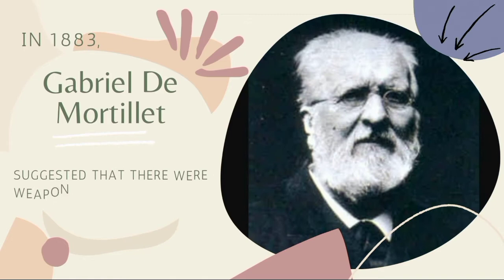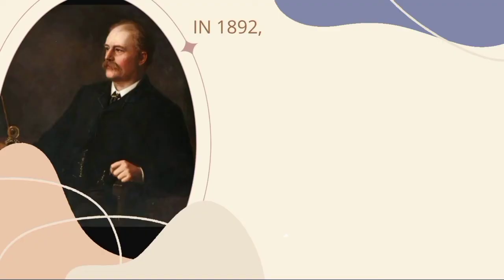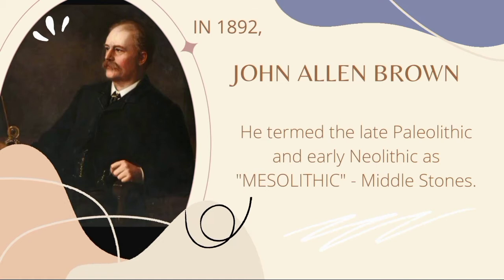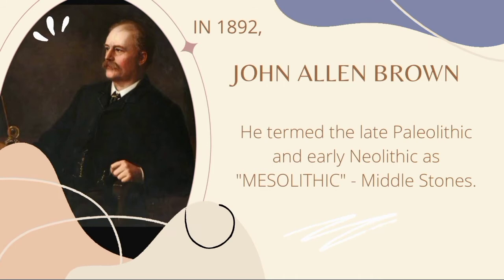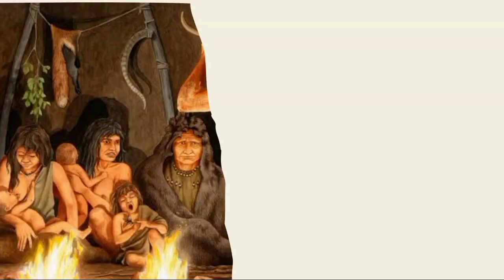In the year 1883, Gabriel de Mortelier, a pre-historian, suggested that there were still weapons and tools that were classified in between the Paleolithic and Neolithic. This in-between period was later on called Mesolithic, or Middle Stones, by John Allen Brown in 1892. John Allen Brown termed the late Paleolithic and early Neolithic as Mesolithic. He is an archaeologist and pre-historian who described Mesolithic as the period where there were some clear traces of improvement and advancement in the way of living of humans.